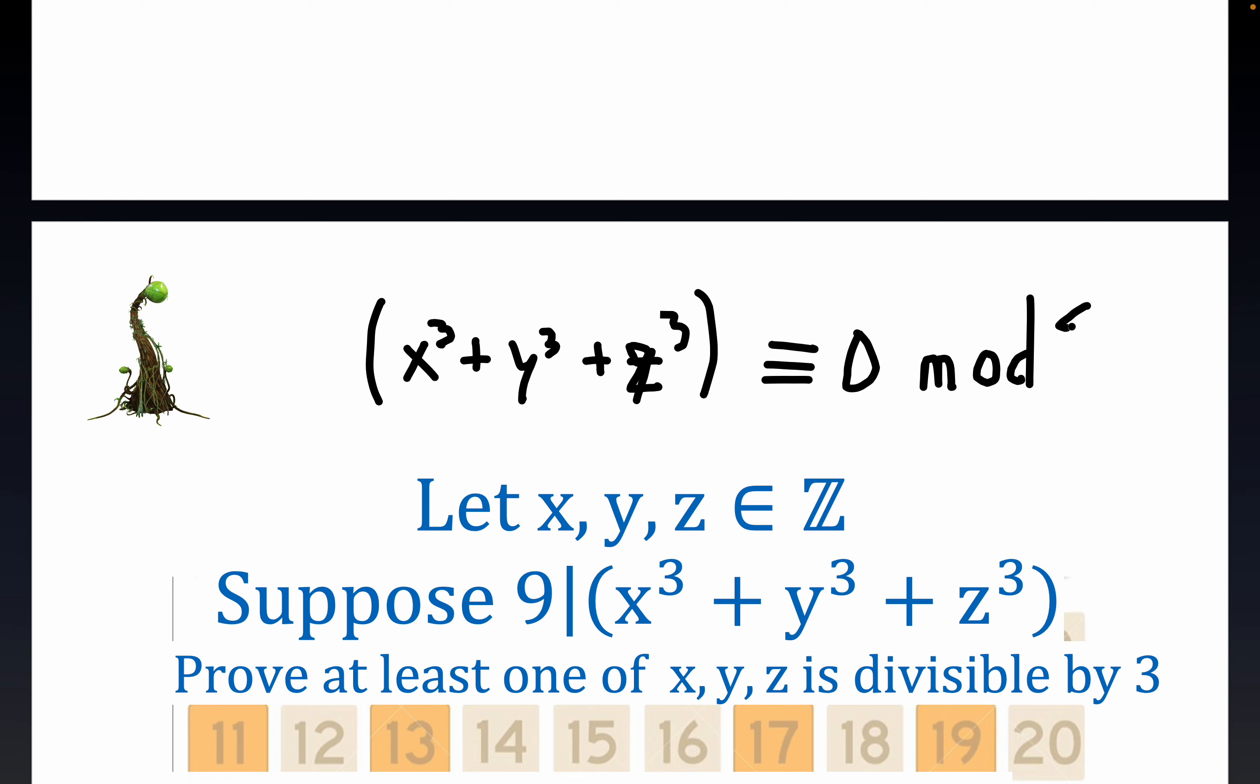So let's keep that in mind. In other words, we're assuming that x, y, and z are integers and that 9 divides the sum of their cubes, and we want to show that at least one of x, y, z is divisible by 3. You have 9 here, you have 3 here, and so this is what we're trying to prove.